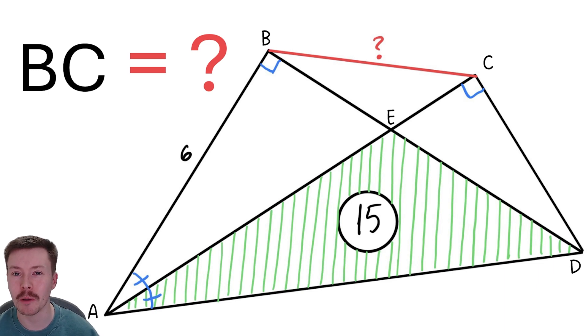Hi and welcome back to my channel. This week's problem is about trying to find the length BC. We've got a quadrilateral here with one side labeled as AB which is 6, and we've got an area labeled, and that's AED as 15.